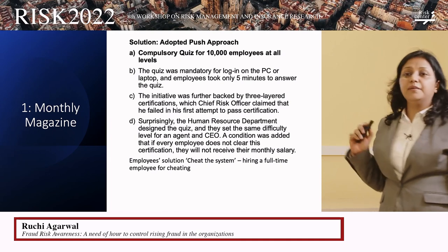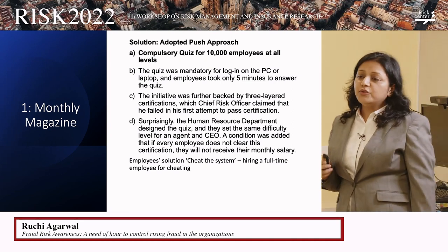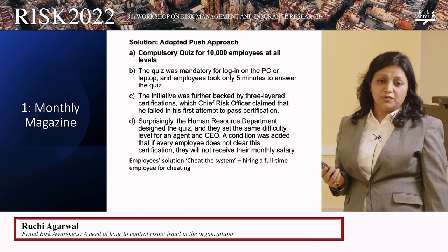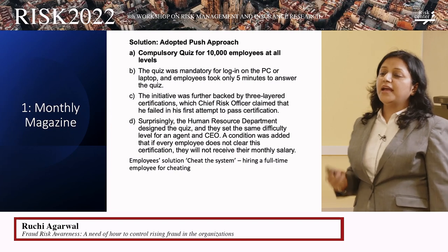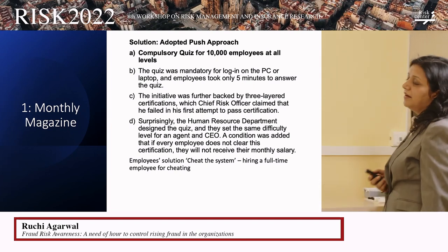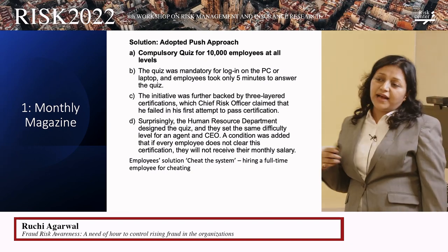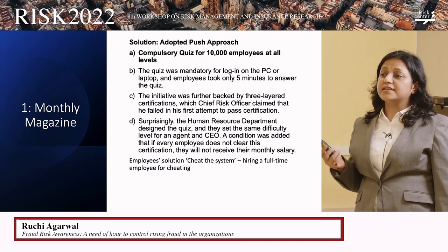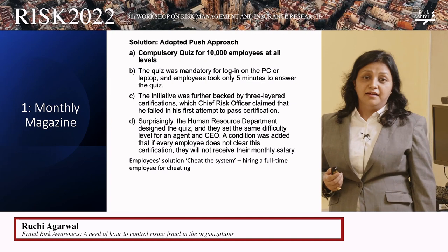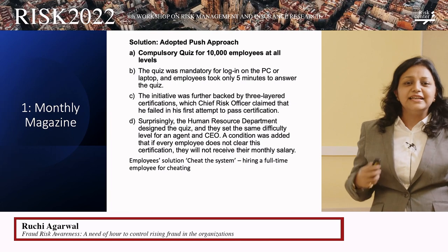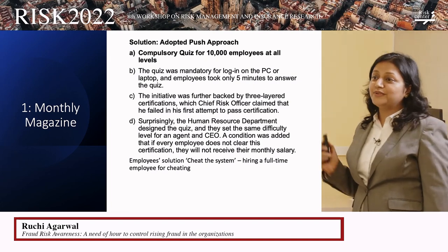Considering this, they adopted a push approach: when coming to office every day, employees had to compulsorily go through a quiz, and if they didn't attempt it, they would not get their salary on time. They later also included a certification — which the chief risk officer of that company stated he could not pass on the first attempt. Imagine a company where the CRO cannot pass a particular exam, but agents and lower- or middle-level executives are required to pass to receive their salary. Finally, employees hired a person to cheat the exam for them, so the approach didn't work well in practice.